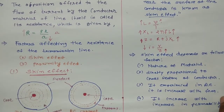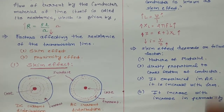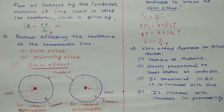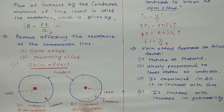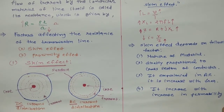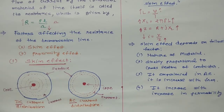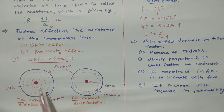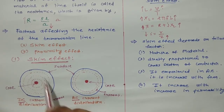Here I am taking two conductors. In the first case, the current flowing through the conductor is direct current (DC). In the second case, the current flowing through the conductor is alternating current (AC). Skin effect generally happens in AC current distribution and it is absent in DC. In the DC case, the current is distributed uniformly throughout the cross-section of the conductor.